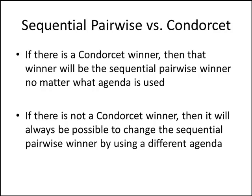The process for finding the sequential pairwise winner is similar to finding the Condorcet winner, except for sequential pairwise we only consider some of the one-on-one matchups — the ones that come up as we go through our agenda — whereas for the Condorcet winner, we consider all one-on-one matchups. So what we'll find is that if there is a Condorcet winner, then that winner will be the sequential pairwise winner no matter what agenda is used. What we just observed — where with one agenda B was the winner and with a different agenda C was the winner — can't happen if there is a Condorcet winner. Let's see if we can figure out why.